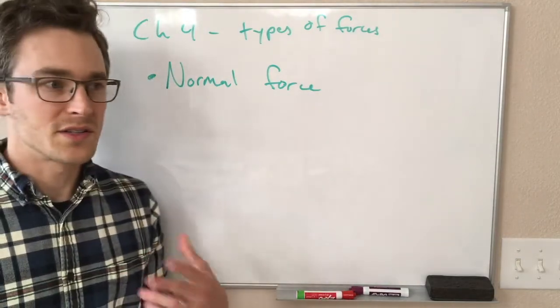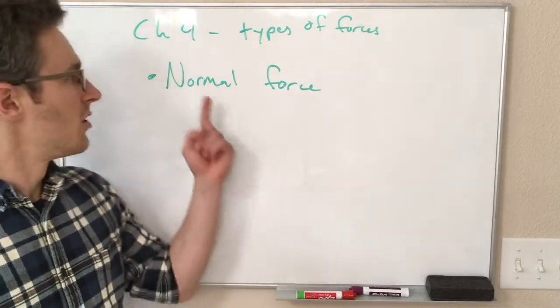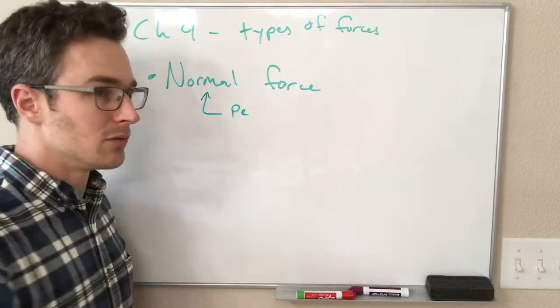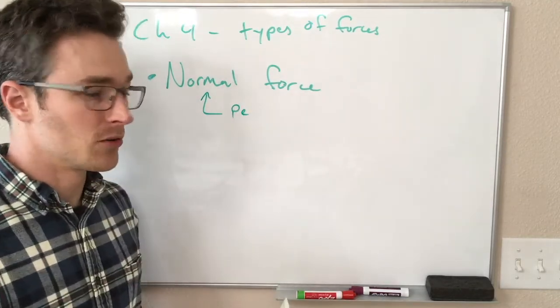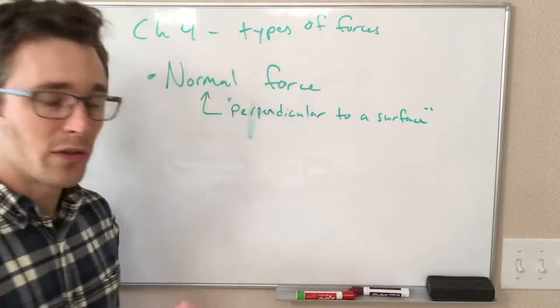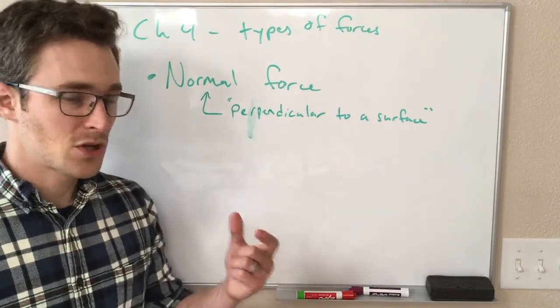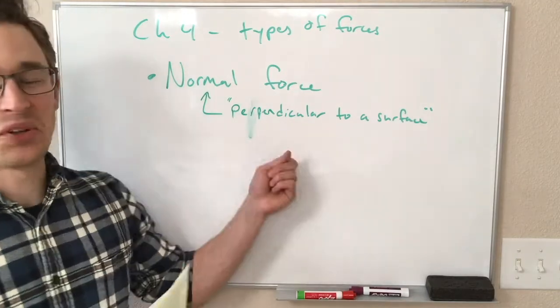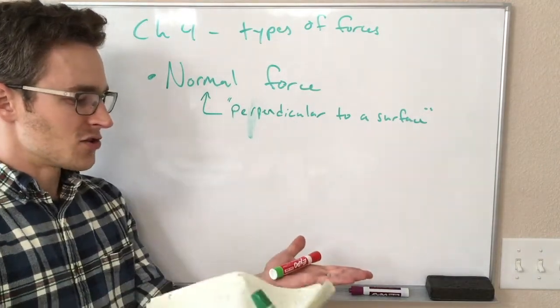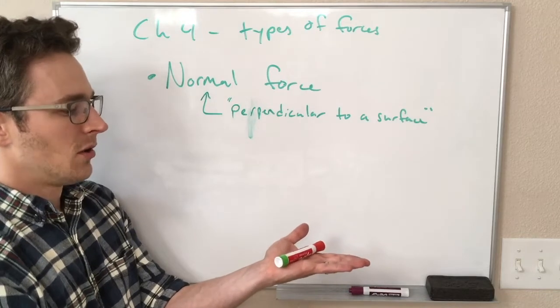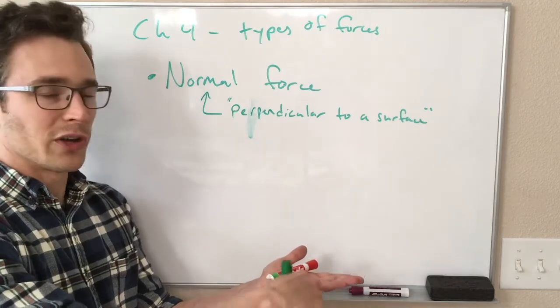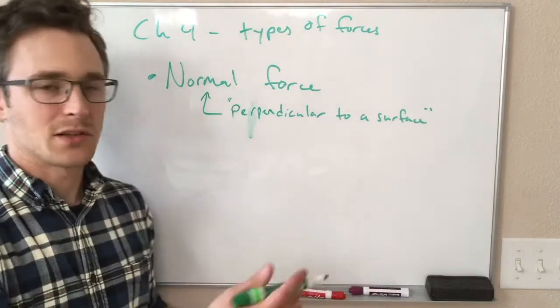The word normal here does not mean like the opposite of strange. The word normal here is a mathematical term that means perpendicular to a surface. So normal in mathematics means literally perpendicular to a surface. So a normal force is one that we get from a surface when we have an object touching that surface, and the direction of this is built into the name, the direction is perpendicular to the surface.